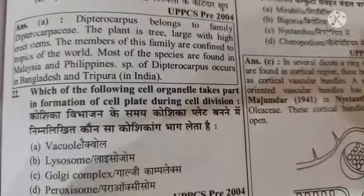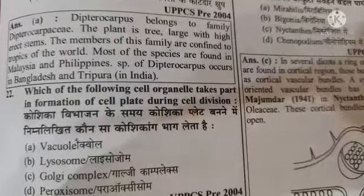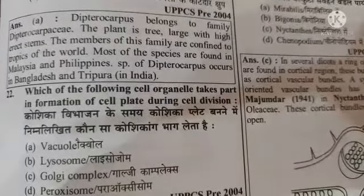Next question: which of the following cell organelles takes part in the formation of the cell plate during cell division? Option A vacuole, option B lysosome, option C Golgi complex, option D peroxisome. The answer is option C, Golgi complex.